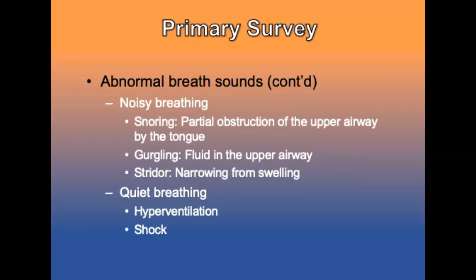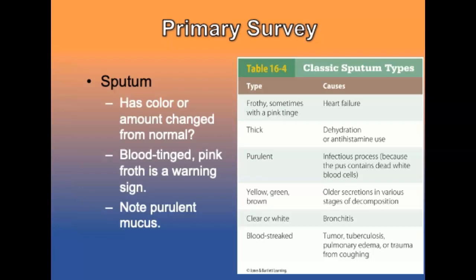Noisy breathing is obstructive breathing. Snoring is a partial obstruction of the upper airway by the tongue; gurgling is fluid in the upper airway; stridor is a harsh, high-pitched sound during inhalation indicating narrowing from swelling or laryngeal edema. Note if the patient is coughing up discolored sputum. Fever and chills with increased sputum production is a sign of infection. Blood-tinged sputum is a warning sign of tuberculosis or broken blood vessels from forceful coughing. Pink foam or froth is a sign of air forced through pulmonary edema fluid, as in congestive heart failure.